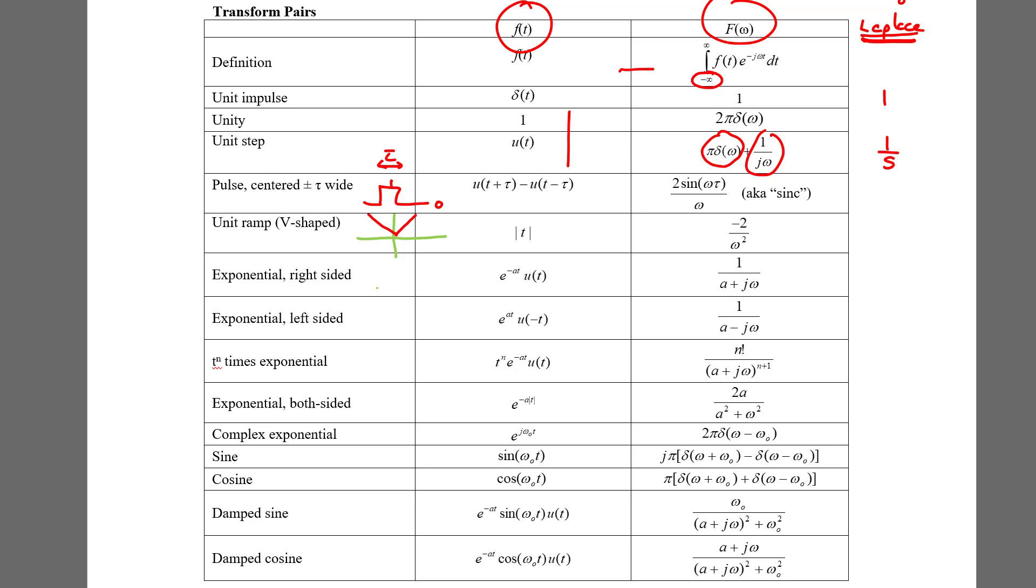Notice how our right-sided exponential has the exact same Fourier transform as what we'd expect from our Laplace transform, just with s replaced by j omega.